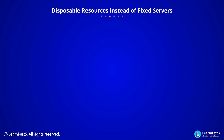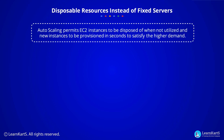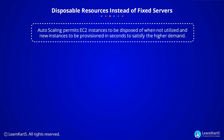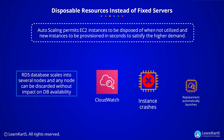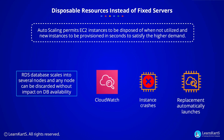Disposable resources instead of fixed servers: in AWS, auto scaling permits EC2 instances to be disposed of when not utilized, and new instances to be provisioned in seconds to satisfy higher demand. For example, an RDS database scales into several nodes, and any node can be discarded without impact on the database availability.